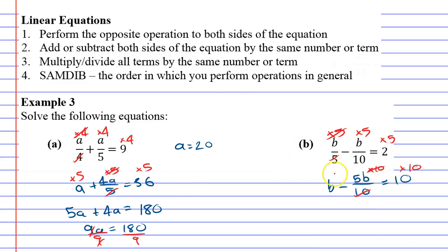That gives us 10B minus 5B equals 100. And 10B minus 5B is 5B which is 100. Finally we divide by 5, and B equals 20.